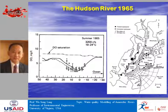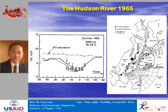I'll take you back half a century, to 1965. This is the Hudson River watershed, with the river coming down through Manhattan, New York City, going out to the Atlantic. The dark circle indicates treated wastewater treatment plants in those days, and the shaded circles are untreated wastewater sources. There were untreated wastewater discharges in those days.